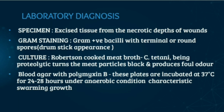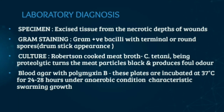Let's move on to laboratory diagnosis. The specimen used is excised tissue bits from the necrotic depths of the wound, which are more reliable than wound swabs. On gram staining, we can see purple-coloured bacilli with terminal round spores. Because of those terminal spores, it has a drumstick appearance — the spores produce a bulging at the end, so it appears like the stick of a drum. However, microscopy alone is not sufficient, as it cannot distinguish Clostridium tetani from morphologically similar non-pathogenic clostridia like Clostridium tetanomorphum and Clostridium sporogenes.